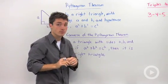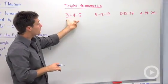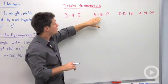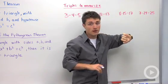Concrete examples of the converse are the Pythagorean triples. There are four that you should memorize: 3-4-5, 5-12-13, 8-15-17, and 7-24-25.